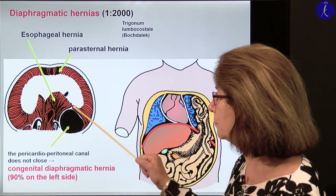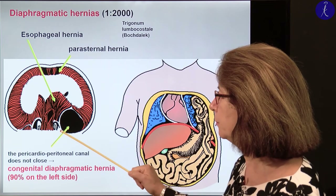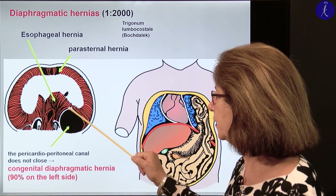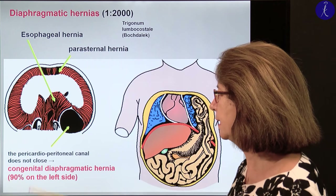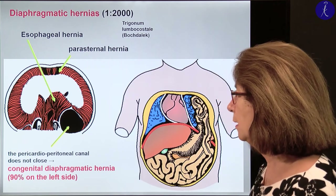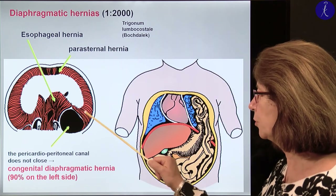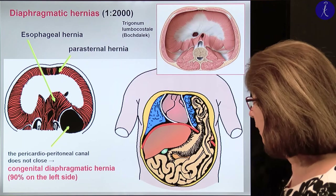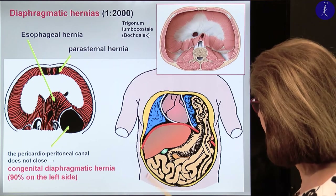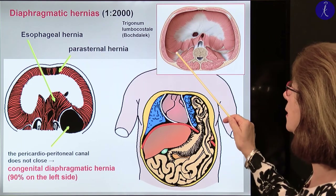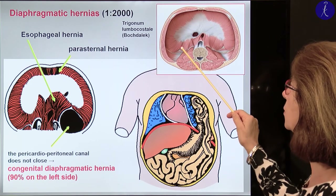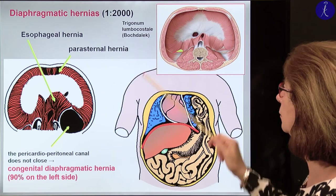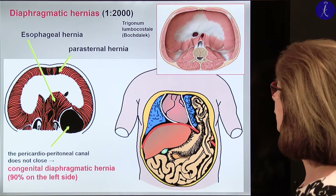A major problem is if the pleuropericardioperitoneal canal doesn't close in this posterior territory. The remnant of it can be seen at the lumbocostal triangle between the lumbar part and the costal part of the diaphragm.